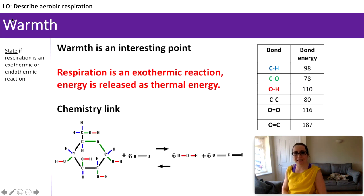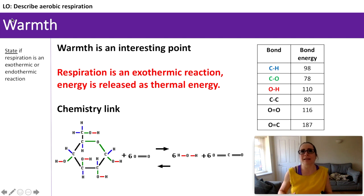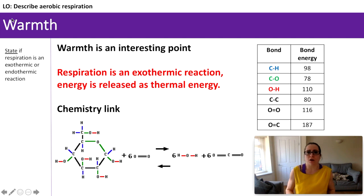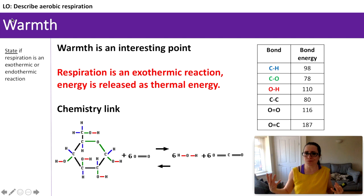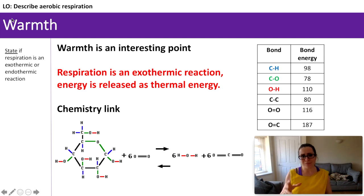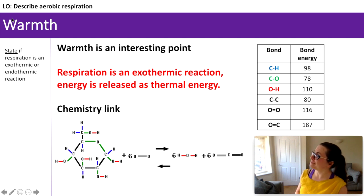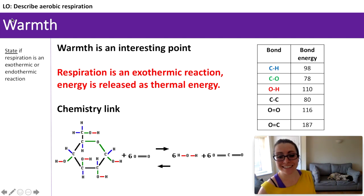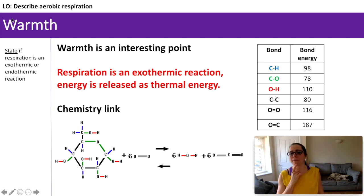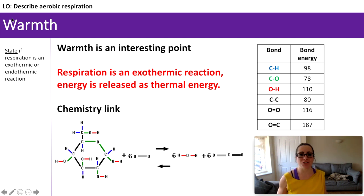Warmth is a really interesting point. We've said that respiration is an exothermic reaction — there are only a couple of scenarios where your body will actively do more to warm you up. One is where your body temperature dips rather low and you start shivering, and that fast contraction of the muscles causes them to use more glucose for respiration, generating warmth as a result of that reaction. This energy is released as thermal energy. Linking to chemistry — this is a skill from the fifth chemistry module: being able to calculate bond energies and proving that reactions are exothermic or endothermic.